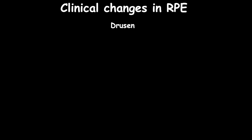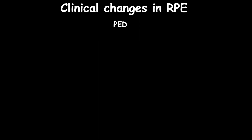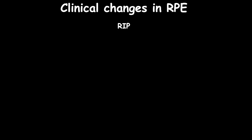In this course, we are going to discuss the most common clinical changes in RPE, such as drusen, which are deposits of extracellular yellow material between the RPE and Bruch's membrane, mainly consisting of lipids and fatty proteins. Pigment epithelial detachment happens when RPE separates from Bruch's membrane as a result of fluid, blood, fibrovascular tissue, and matrix accumulation.